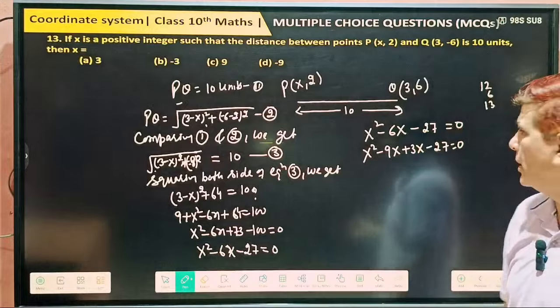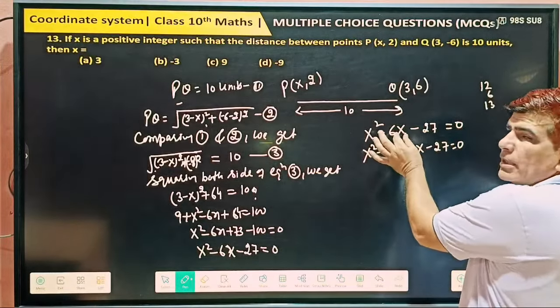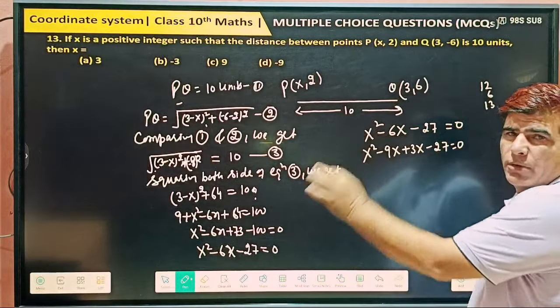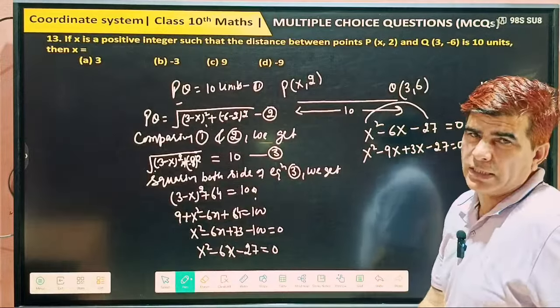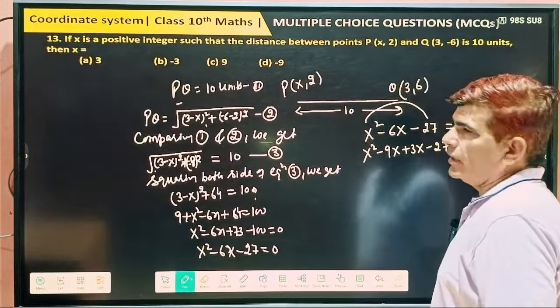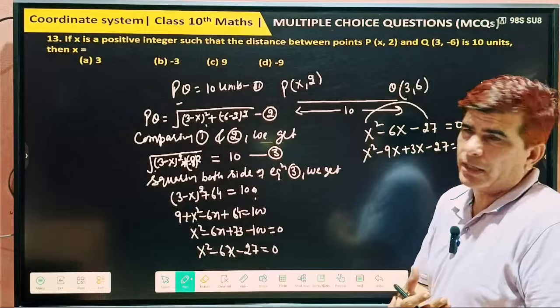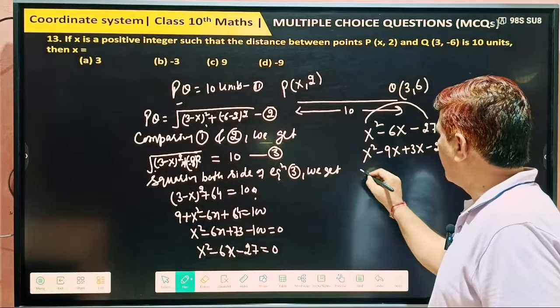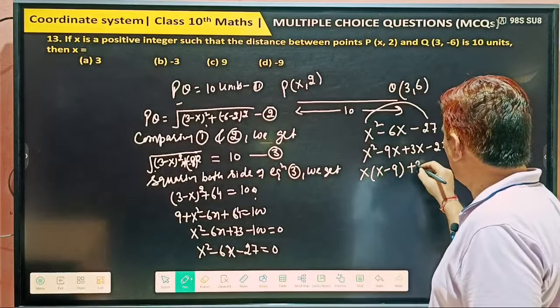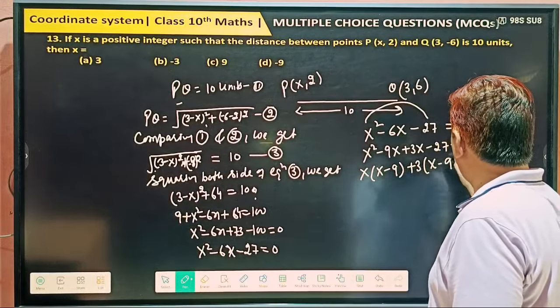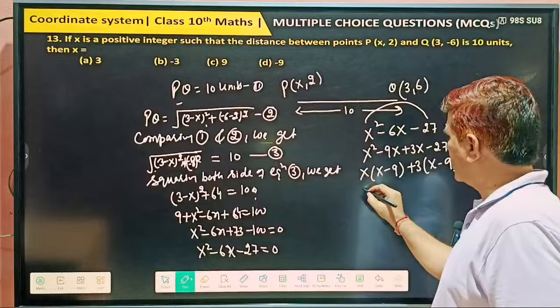So we can write x square minus 9x plus 3x minus 27 equal to 0. We will check. Our step number 1 is right. What's their sum? Minus 6x. It's meaning our step number 1 is right. What's their product? Minus 27x square. It's meaning factorization or splitting the middle term method is right.